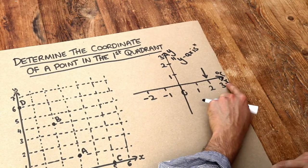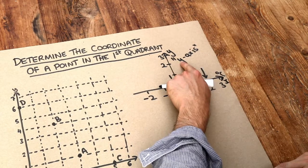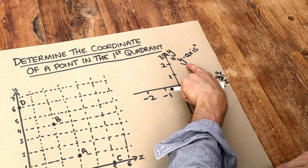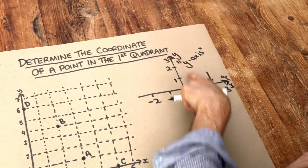Notice that x comes alphabetically before y, so we go left-right first on the x-axis and then vertically up-down on the y-axis.